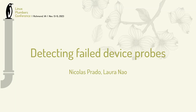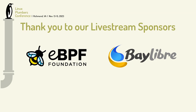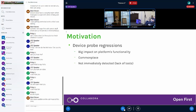My name is Nicolas, and I'm going to talk about device probe regressions. The issue is that most of the platform is comprised of hardware blocks, and in the kernel they will be driven by drivers. Whenever you have a regression that impacts those, you're going to see some impact in the platform's functionality. They are still very commonplace. I've been doing some work upstreaming support for some MediaTek-based Chromebooks, and I've seen a lot of these kinds of regressions over time working on this.